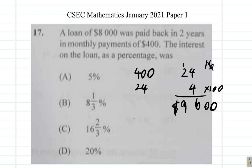Now the interest in terms of money would be 9,600 minus 8,000. And so what you get? 0, 0. 6 minus 0 is 6. 9 minus 8 is 1. So the person paid $1,600 in interest.